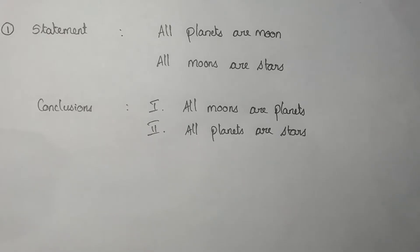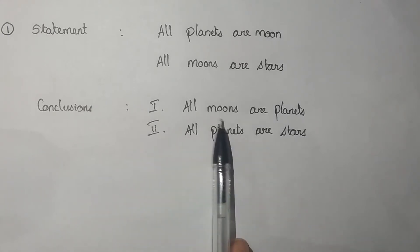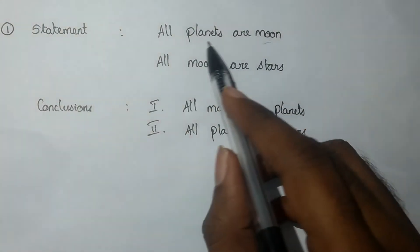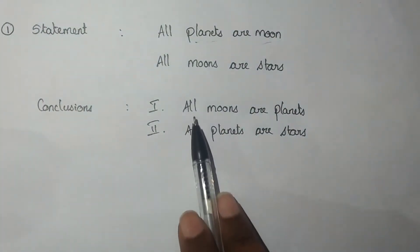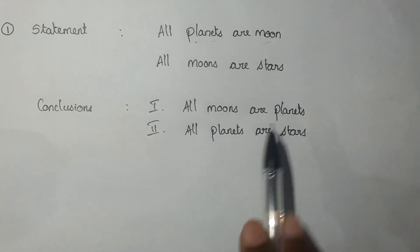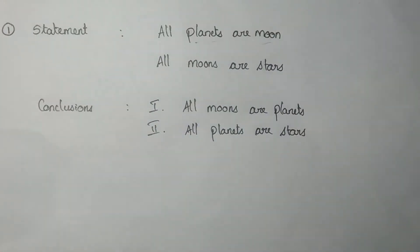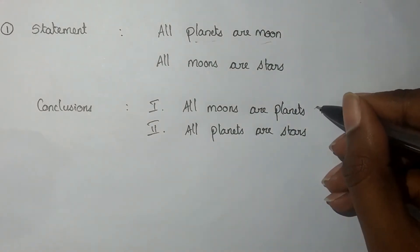First example: Statement 1 — All planets are moon. Statement 2 — All moons are stars. Conclusion 1: All moons are planets. Conclusion 2: All planets are stars. For conclusion 1, 'All' is not reversible, so All planets are moon cannot be reversed to All moons are planets — conclusion 1 is wrong.